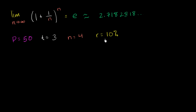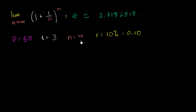But since we're going to compound four times a year, we're going to divide this by four to see how much we compound each period. So 10% is the same thing as 0.10. I encourage you to pause this video and try to write an expression for the amount you would have to pay back if you were to borrow $50 over three years, compounding four times a year, each period compounding 10% divided by 4. How much would you have to pay back in three years?